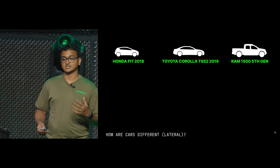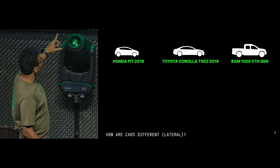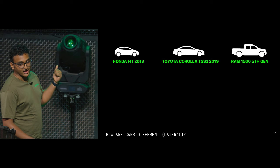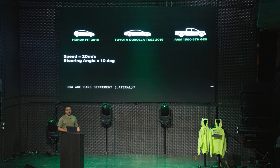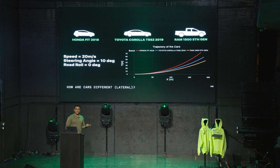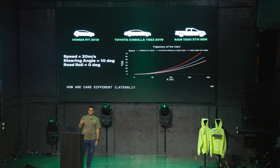So to understand how these differences in cars manifest, let's look at this example. These are three cars: the Honda Fit, the Toyota Corolla, and the Ram — all quite different. Let's focus on lateral movement. Assume all cars are moving at 20 meters per second, all have a 10-degree steering angle, and they're all traveling on a flat road. This is the trajectory those cars would take — Y versus X — showing what the cars do under the same instructions.